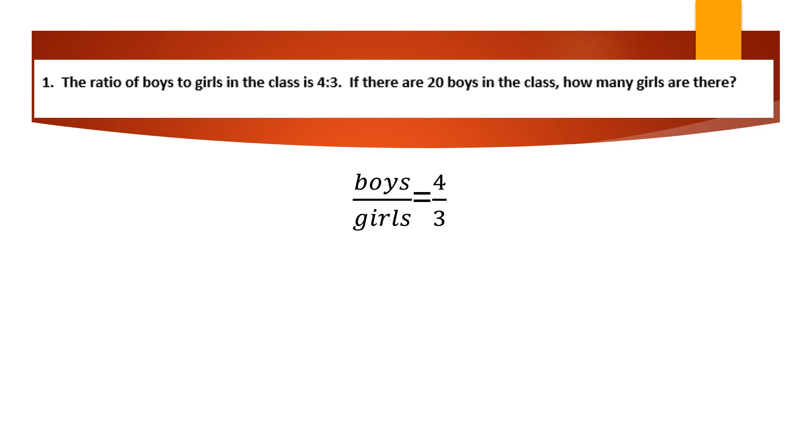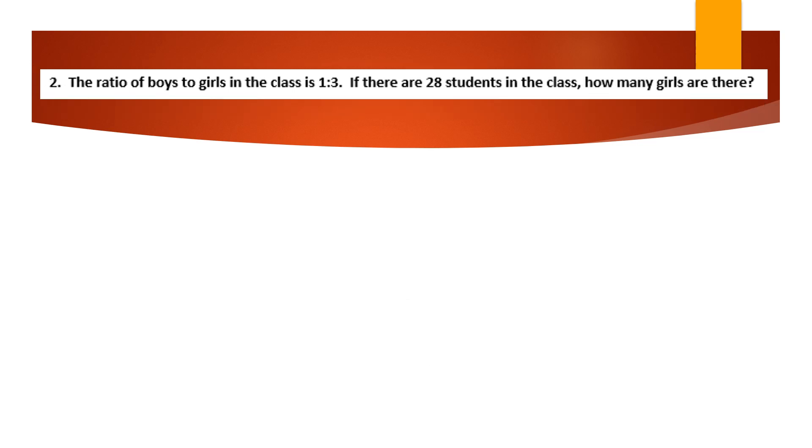And so if you have 20 boys, it's going to go on top with the boys. So you're going to get 20 over girls equals 4 over 3. And you're going to substitute that girls for x. And then we can do the same exact thing as what we know how to do, cross multiply and solve for x. Just like that.